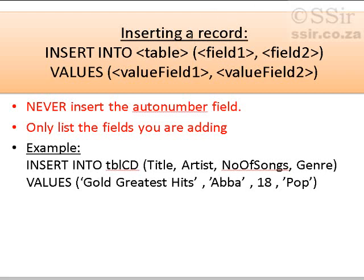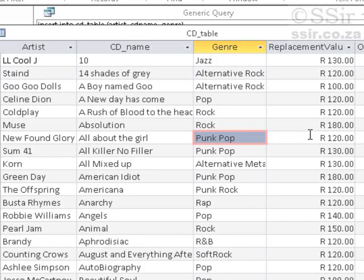The first one would be to insert a record. The command is INSERT INTO, then the table name, and then in brackets the fields — those fields that you want to enter values for. You don't have to enter all the fields, but you must put the names of the fields for which you are going to enter values.